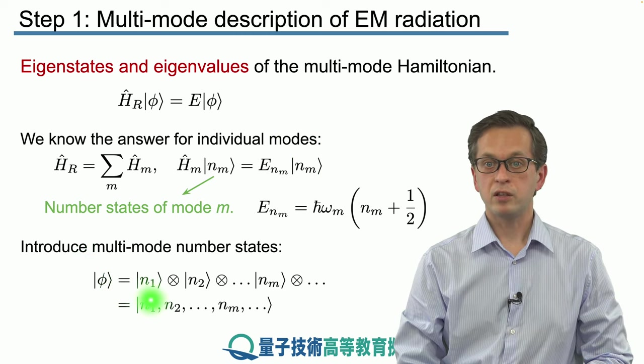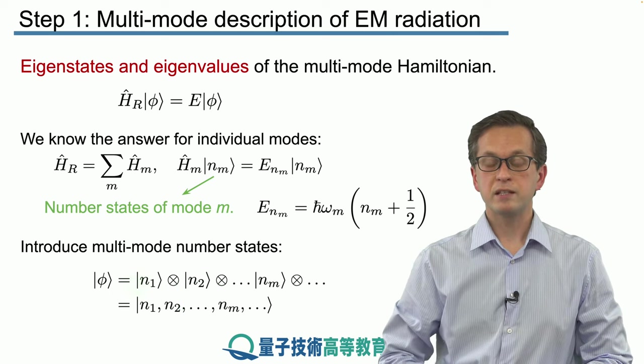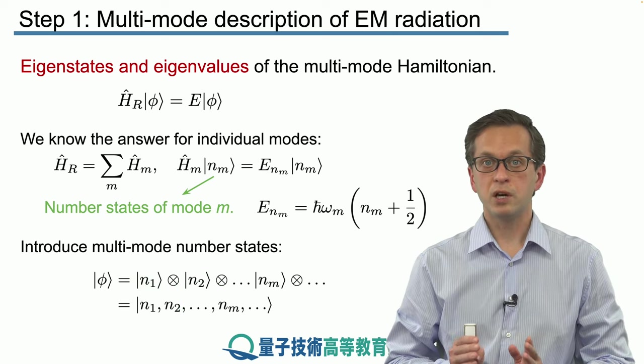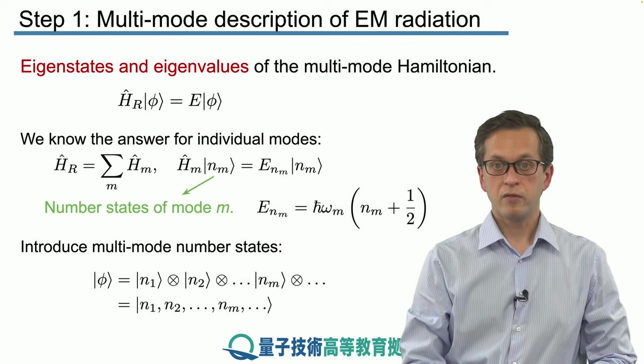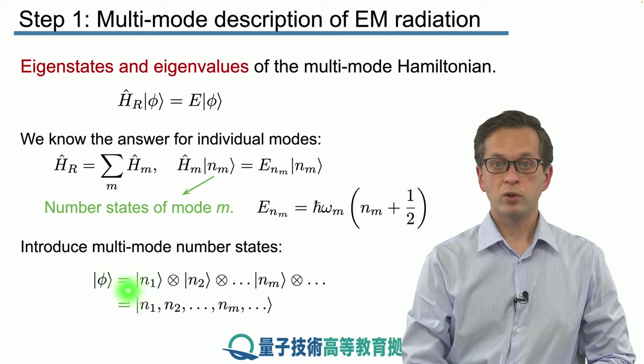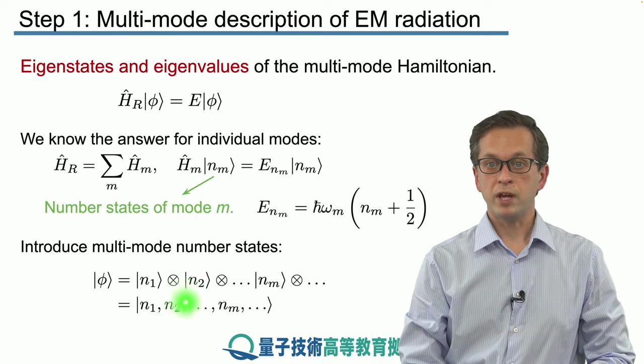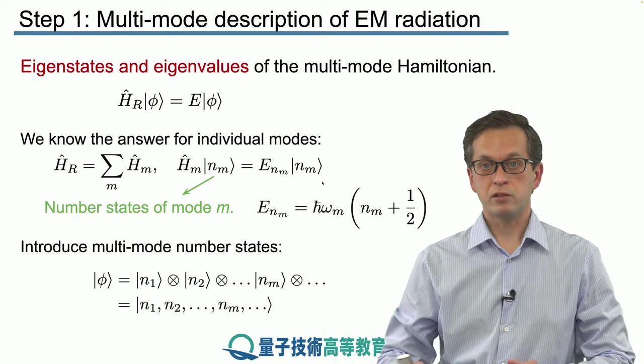The multimode number states can be written as the tensor product of the individual number states for individual single modes. For example, in this notation, we've got n1 photons in mode 1, then we've got n2 photons in mode 2, and so on.